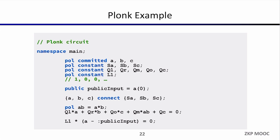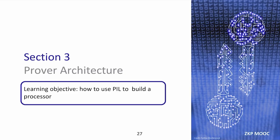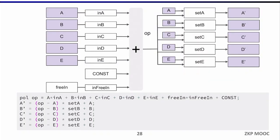Now that we have the tooling for building polynomial circuits — this arithmetization layer — let's try to build something more interesting: a processor. This will be the base for the ZKVM prover.